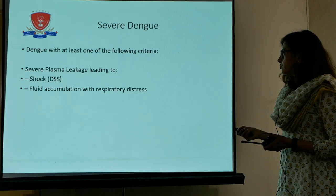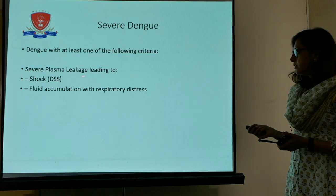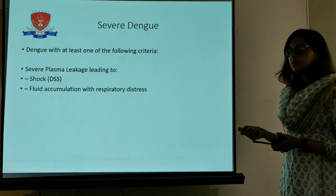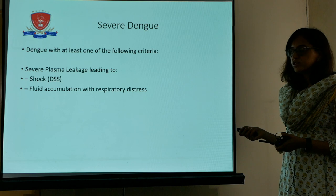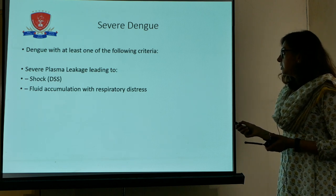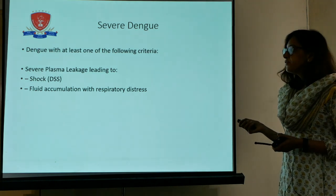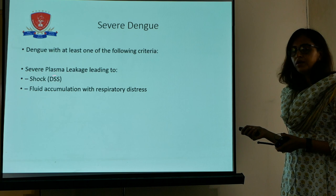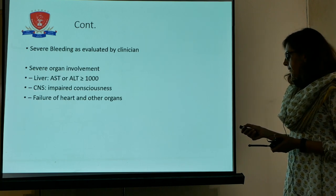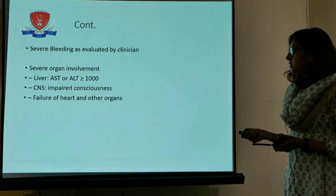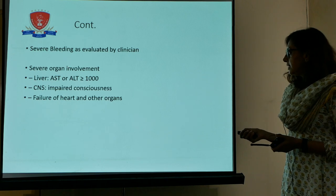Severe dengue is dengue with at least one of the following criteria: severe plasma leakage leading to shock — called dengue shock syndrome — or fluid accumulation with respiratory distress. Severe dengue includes dengue shock syndrome or any organ involvement such as the liver, lung, CNS, and heart.